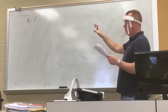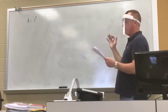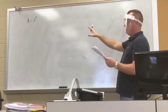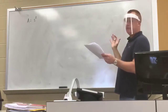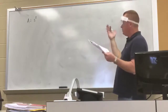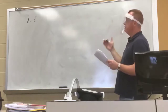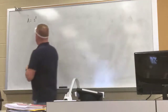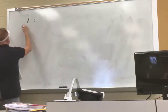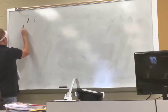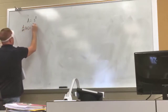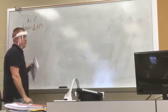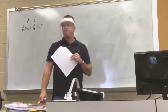We want to know at what rate the area of that square is changing when the sides are a certain length. So we have our formula A = s². Take the derivative with respect to time of both sides — we always do that on all of these.